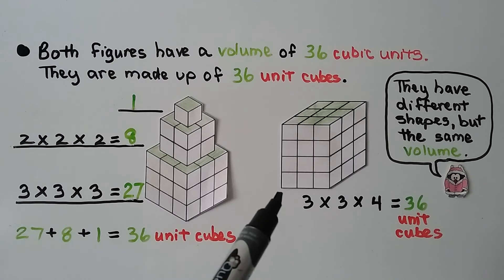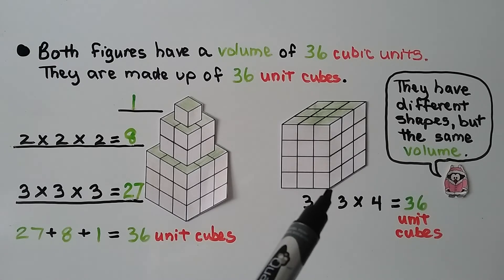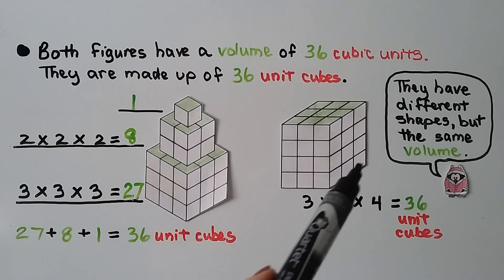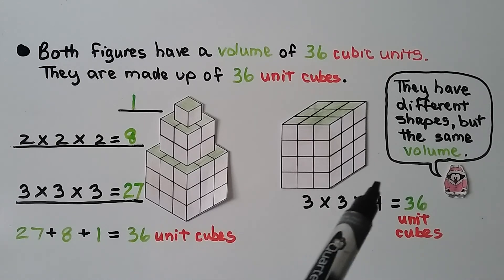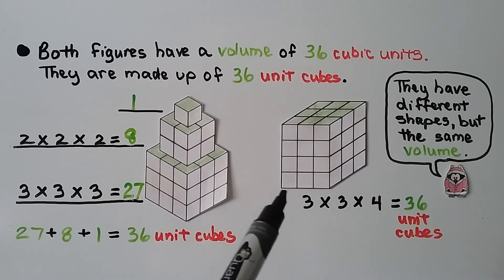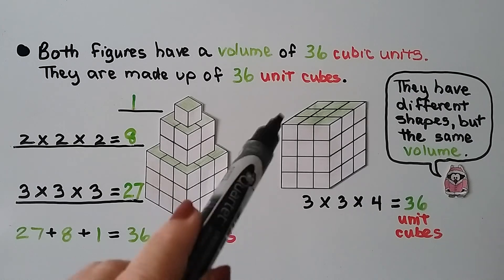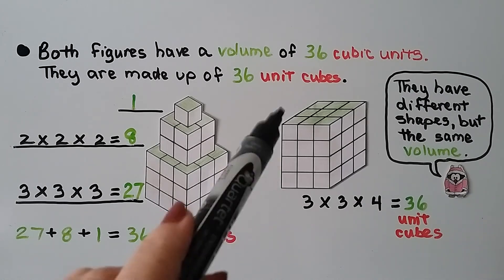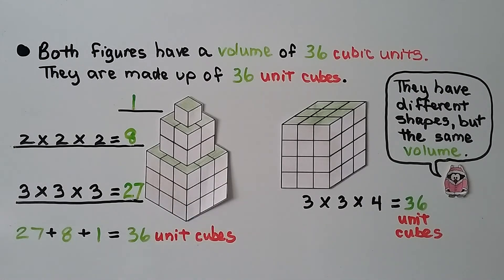For the second figure, we've got 3 going across and 3 going back — that means there's 9 unit cubes along the base — and its height is 4 unit cubes: 9 times 4 is 36 unit cubes. They have different shapes but the same volume. They're arranged differently, but they both use 36 unit cubes — they're both 36 cubic units.